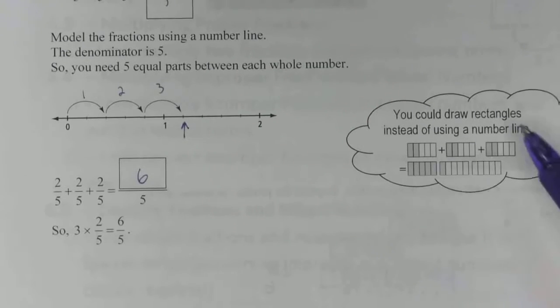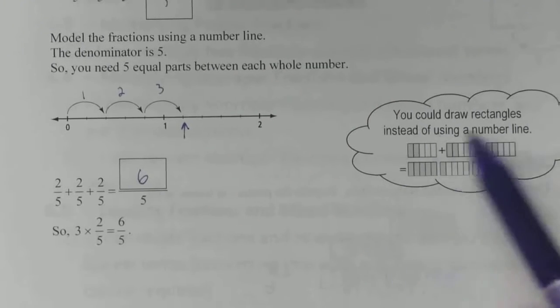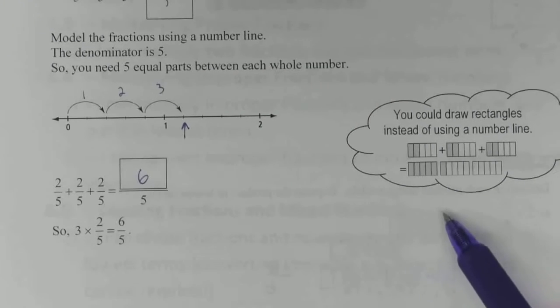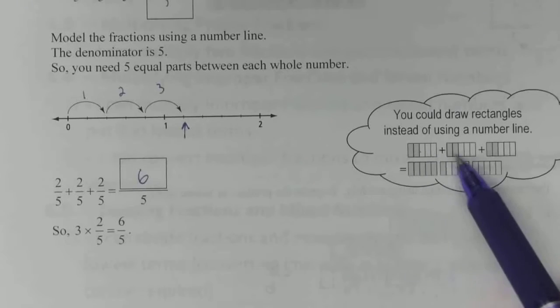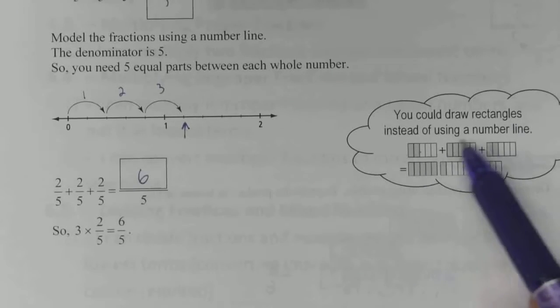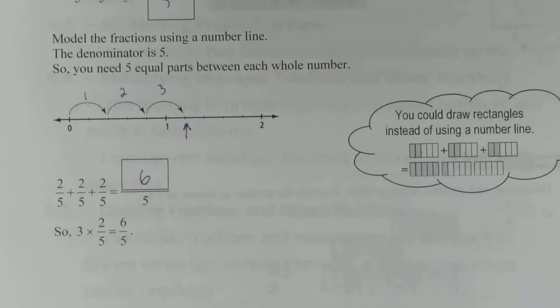You could draw this out using fraction strips or rectangles, just like we did before. Two-fifths, two-fifths, and two-fifths, all the shaded ones clump together to make six-fifths.